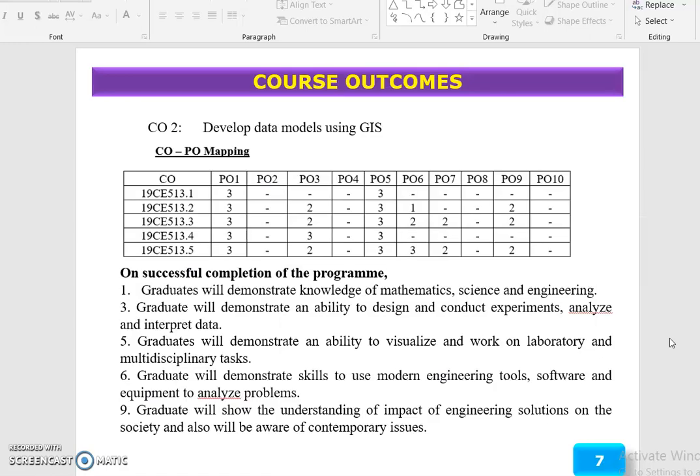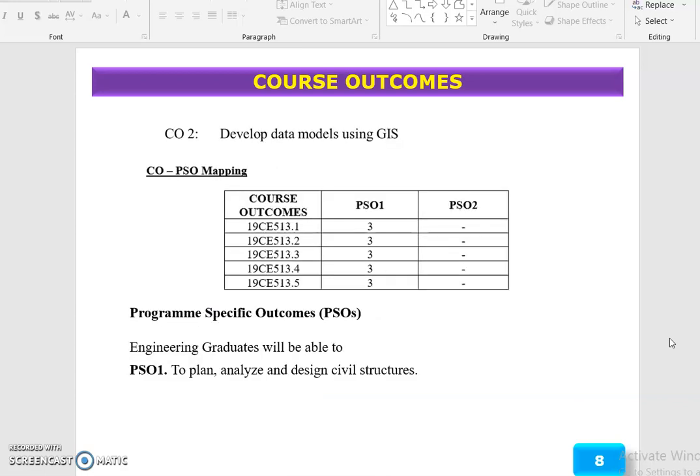The outcome of this topic is to develop data models using GIS. This will be correlated with PO 1, 3, 5, 6, 10, 9 along with PSO 1. The outcome is to develop data models using GIS.